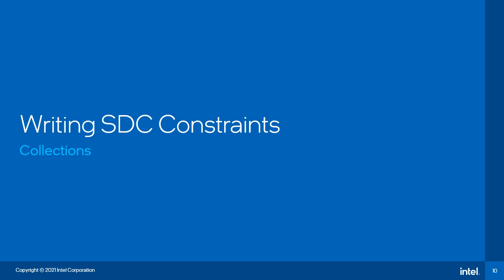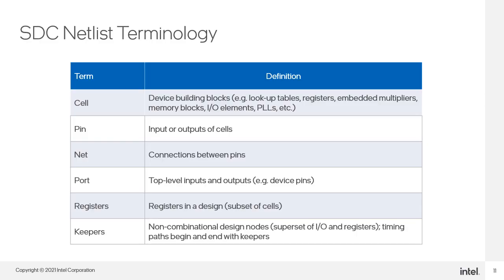I will now go over writing collections for SDC constraints. What is the netlist? When the Timing Analyzer is launched, it needs a database or netlist of the design. The Intel Quartus Prime software creates this netlist after the fitter runs. The Timing Analyzer will take this netlist and create an SDC-compatible netlist called a timing netlist. The SDC files can now be correlated to the design elements in the timing netlist and reports generated to see if timing has been met.